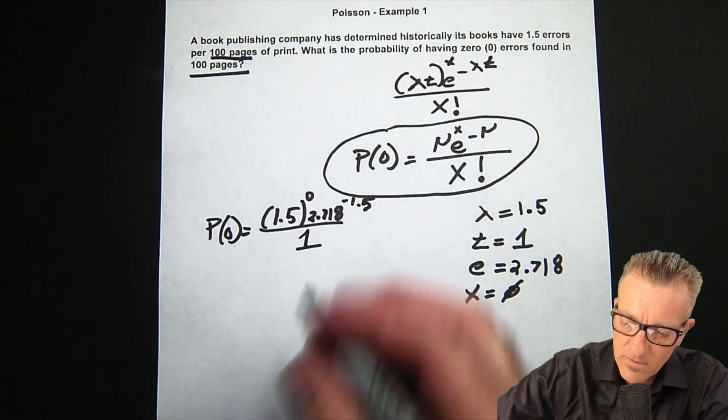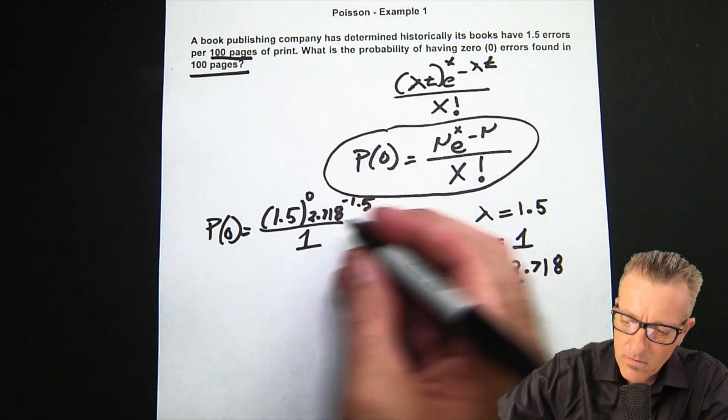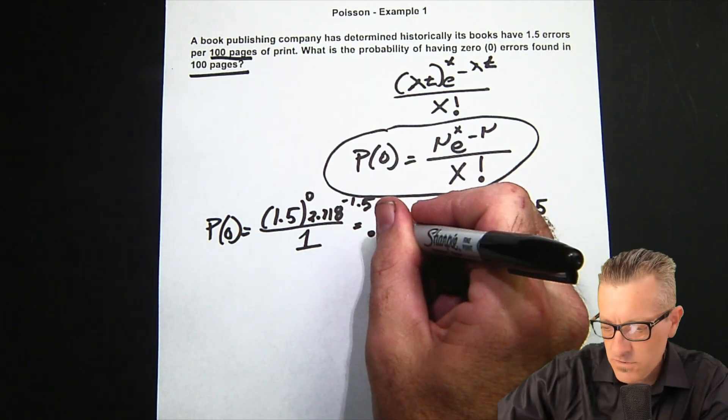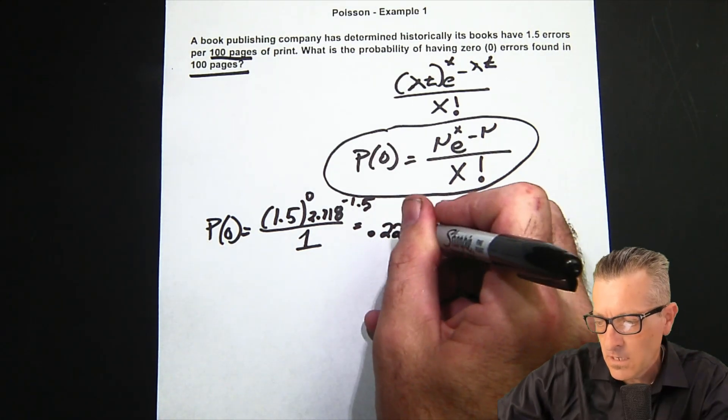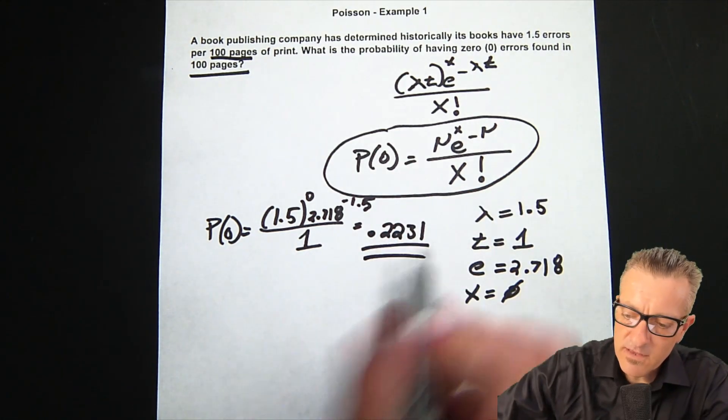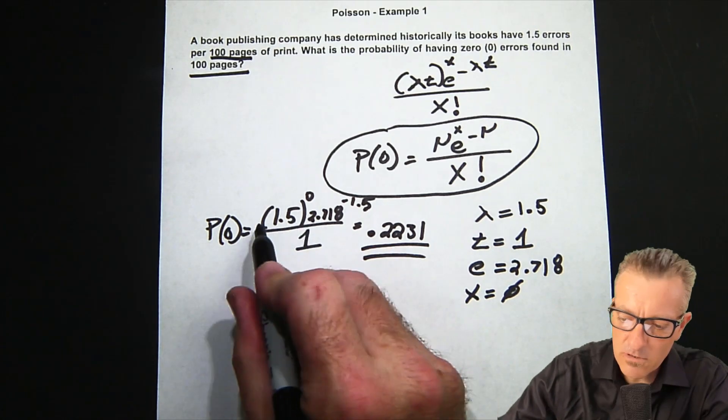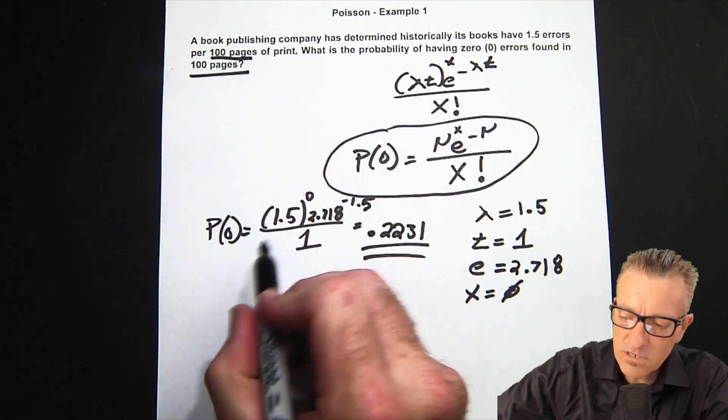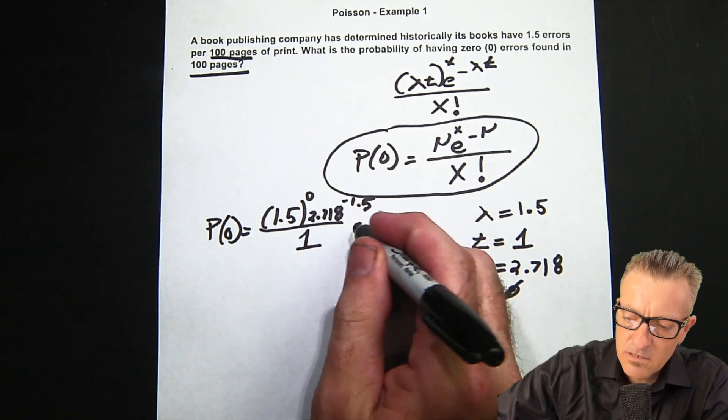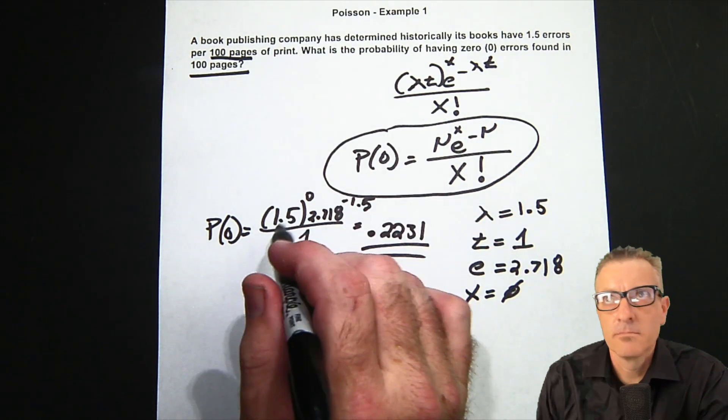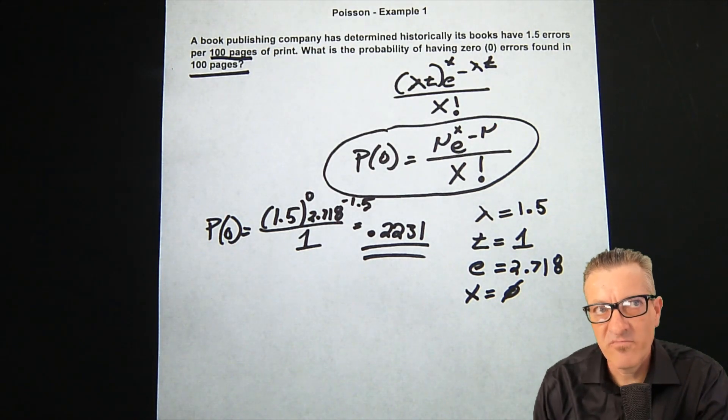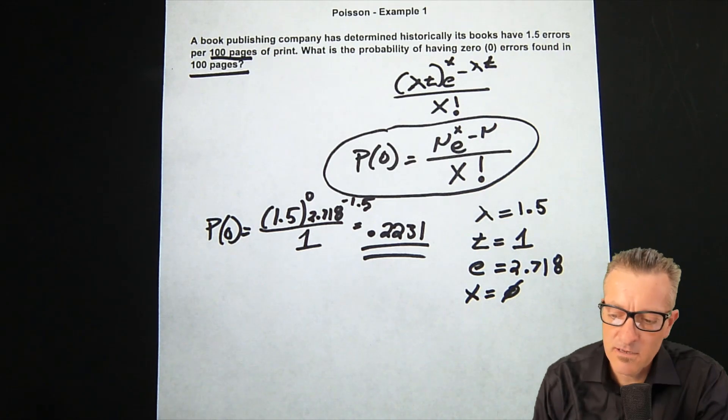So let's do the math. We end up with this: our answer is 0.2231 when you do the math. I recommend doing the top portion first, then the bottom portion, and then divide it out. Try not to do it all in the same calculation on your calculator.